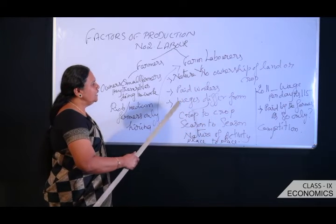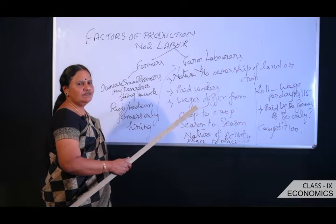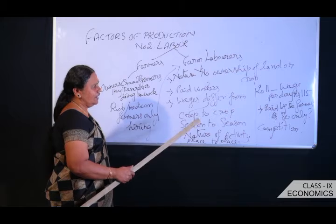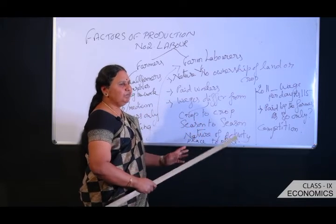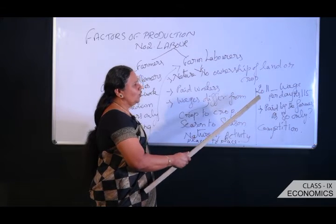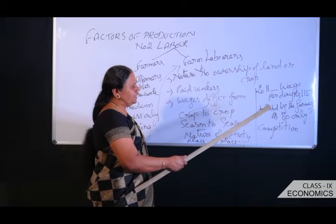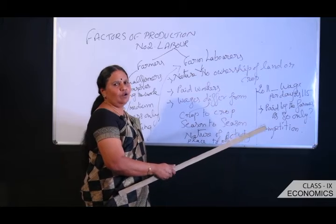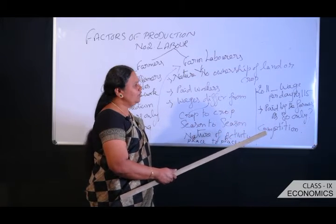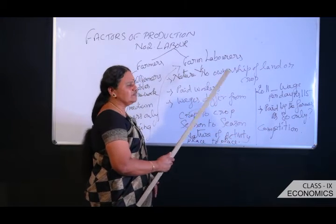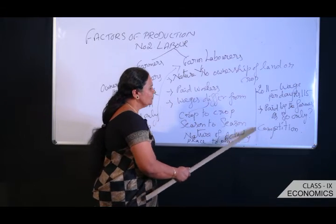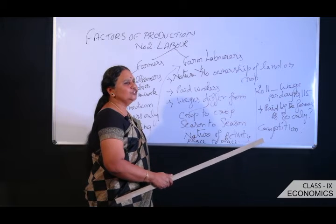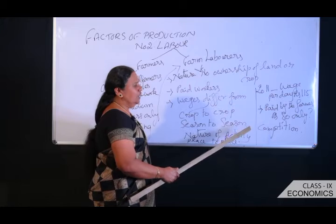Paid workers are sometimes provided meals and paid either in kind — meaning food grains or other items — or in cash. In Palampur, according to 2011 government data, the minimum wage should be Rs. 115, but workers are actually being given only Rs. 80 — nearly Rs. 35 less. This is because of thick competition: when more people are available for work, wages automatically get reduced.